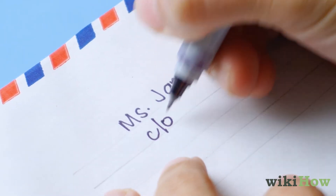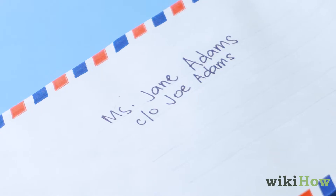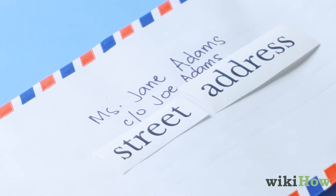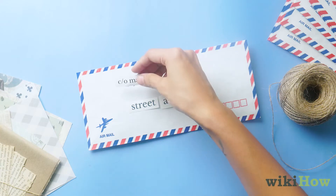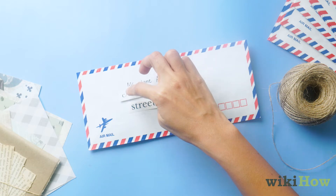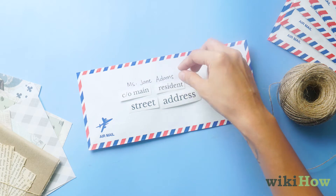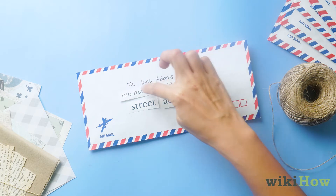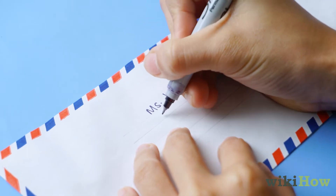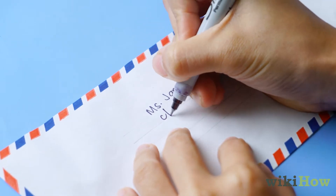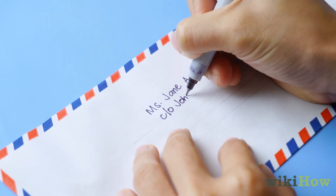In some cases, you may need to add some additional information below the recipient's name and above the street address. For example, if you're writing to somebody who doesn't normally live at the address, you can put the letter in the care of the main resident. To do this, write something like 'Care of John Smith' on the second line.